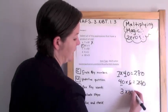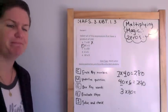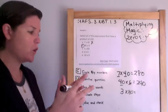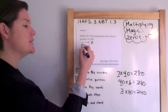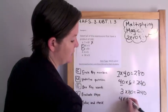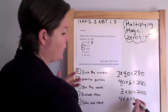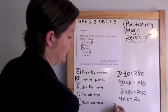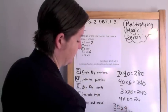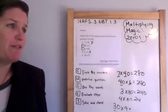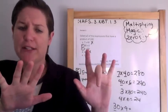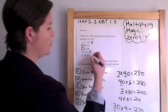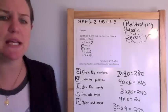3 times 80: I'll do my 3's — 3, 6, 9, 12, 15, 18, 21, 24 — add the zero — and that's an answer. 4 times 6: 6, 12, 18, 24 — 24 is right, but there's no magic zero, so this one is not right. And 30 times 9: 9, 18, 27 — we have a magic zero, but it's not 240. So B and C are your answers.